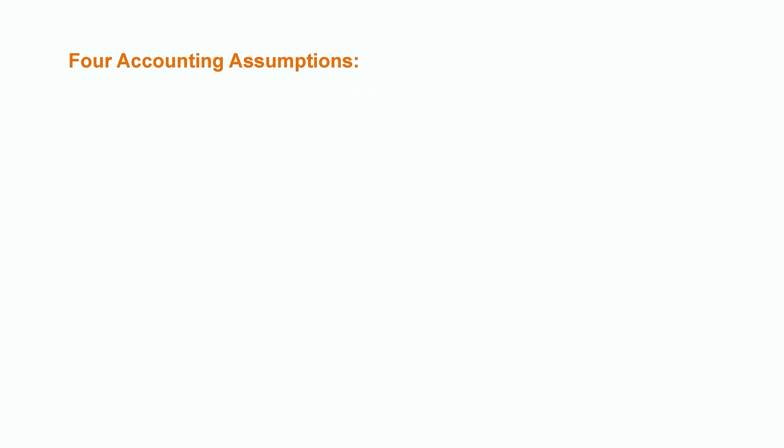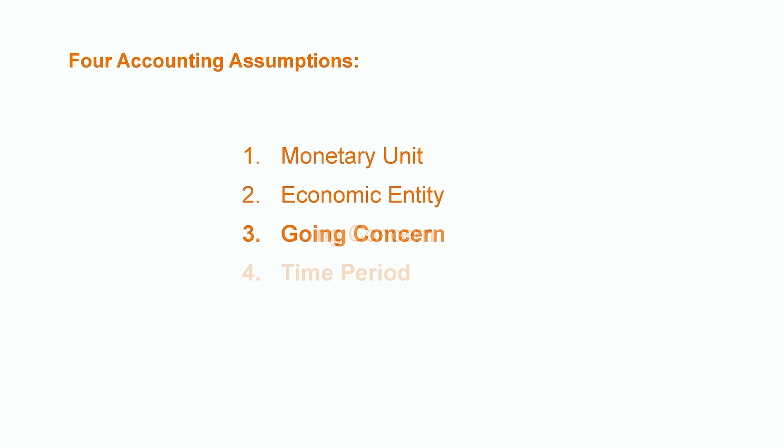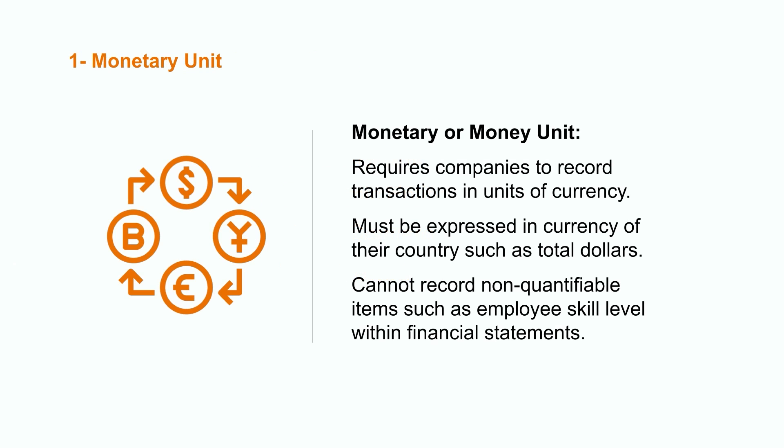Let's start by talking about the four accounting assumptions: monetary unit, economic entity, going concern, and time period. The monetary unit assumption requires that companies record their transactions in units of currency. This means the information users see in financial statements will be expressed in the currency of their country, such as expressing revenue or expenses in total dollars.